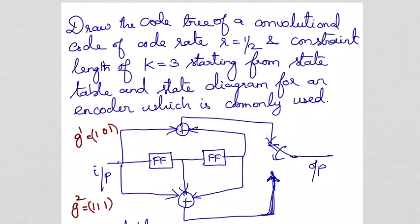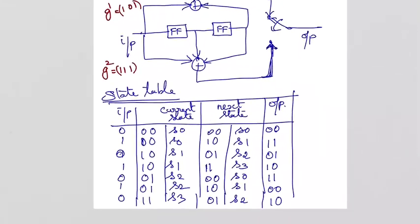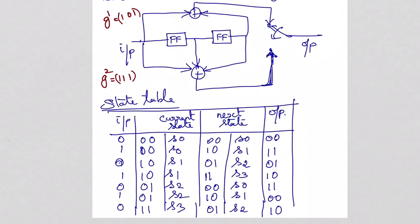After drawing the encoder diagram, how do we go to the state table? So first you have to fill up the state table. Look at this table — it has columns: Input, Current State, Next State, and Output. Input is either 0 or 1. For every current state, we apply 0 as input and 1 as input, and check what is the next state and the corresponding output. That's why k is equal to 3.